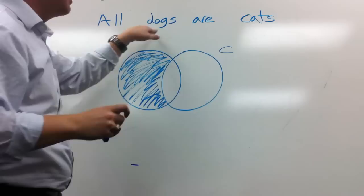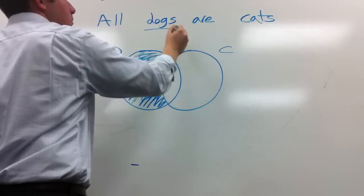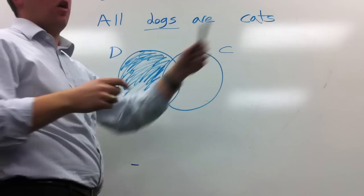An easy way to think of this is basically you'll always shade the S, the subject, of an A statement. You'll just shade that part of the circle where it doesn't overlap with the P every single time. So that's A.